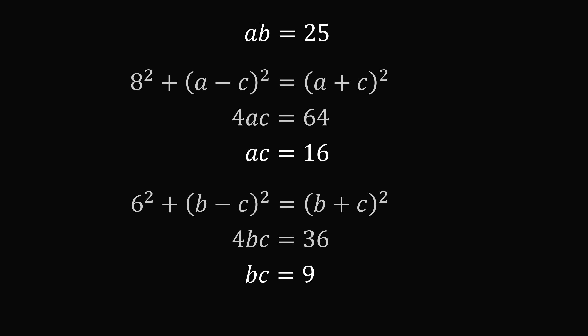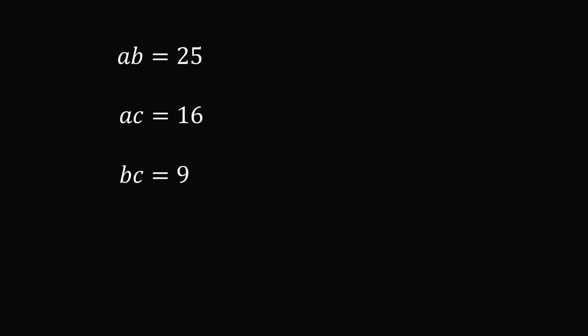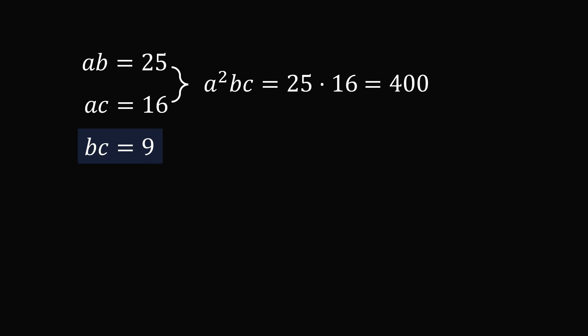Let's now focus on these three equations. ab is equal to 25, ac is equal to 16, and bc is equal to 9. From the first two equations, we multiply them together to get a squared bc is equal to 25 times 16, which is equal to 400. But from the third equation, we know bc is equal to 9.